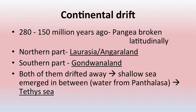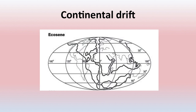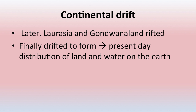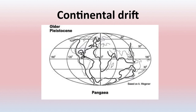The northern part of Pangea was known as Laurasia or Angara land, while the southern part was known as Gondwana land. When they drifted apart, a shallow sea was created between the northern and southern parts, known as Tethys Sea — water from Panthalassa seeped in to form this sea. Laurasia and Gondwana land further drifted apart and finally formed the present-day distribution of land and water on the earth surface, as you can see in the pictures showing progressive rifting and drifting.